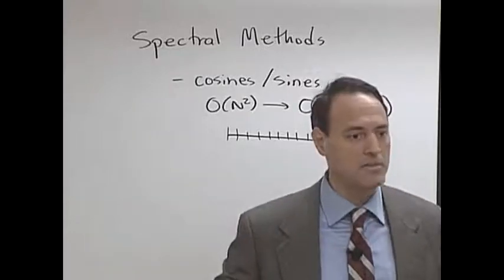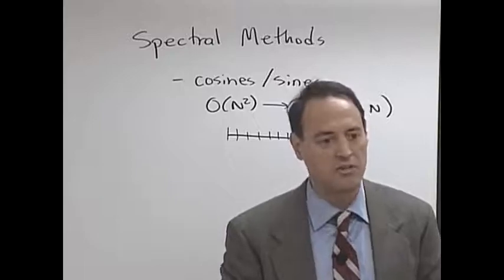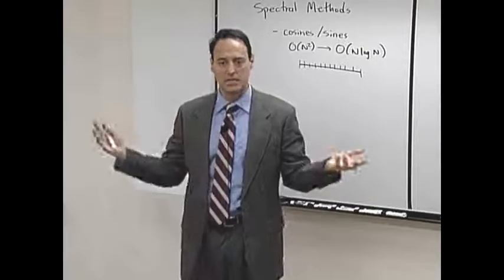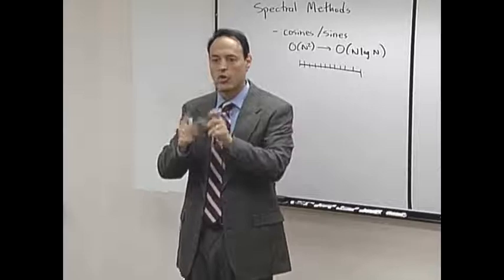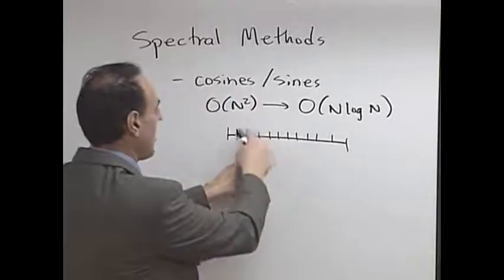When you do finite difference, the way you do derivatives, the way you do everything is by using your neighbors. You break it up, and if I want a second derivative here, I need a neighbor over here, a neighbor over here, twice myself. So everything is a local calculation. This point here cares only about its neighborhood.